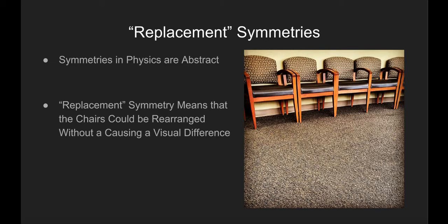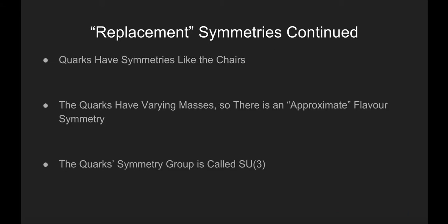This is what I mean by a replacement symmetry. In physics, a similar, yet more complex, type of symmetry occurs. If the up, down, and strange quarks were exactly like the chairs, they would be indistinguishable. However, the up quark has a slightly smaller mass than the down quark, and the strange quark has a slightly larger mass than the down quark, so they are not completely symmetric.